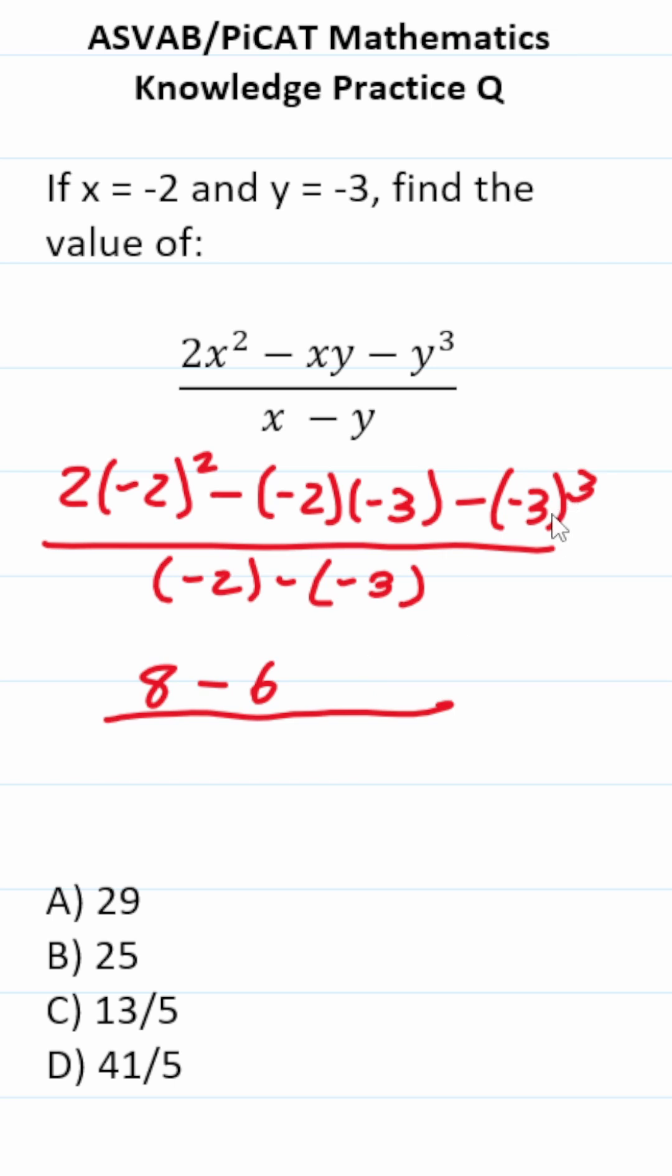Negative 3 to the third is negative 3 times negative 3 times negative 3, which is going to be negative 27. But we have a negative here. A negative minus a negative becomes plus 27.